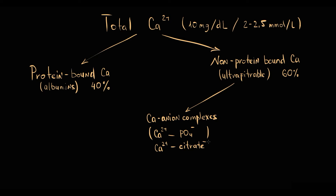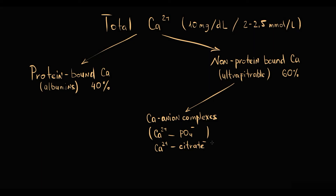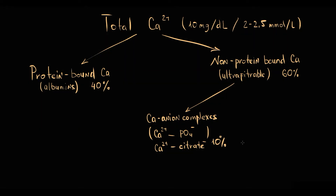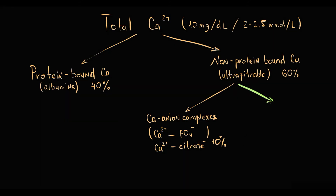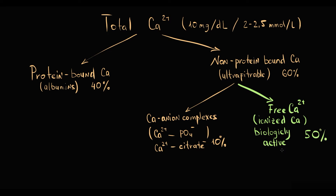From total blood calcium, 10% is present in the blood in complexes with anions. But the majority of calcium in the blood is present as free calcium, or so-called ionized calcium. Only ionized calcium is biologically active. 50% of total calcium in the blood is ionized calcium.